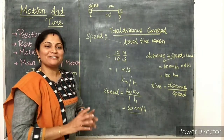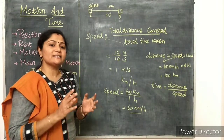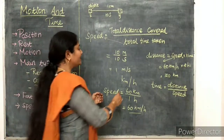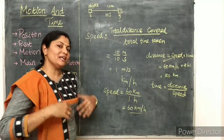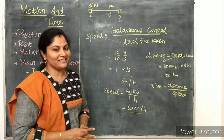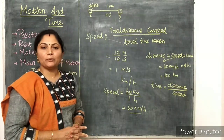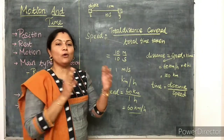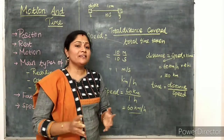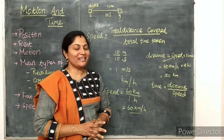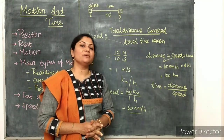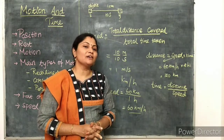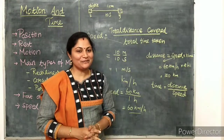That is all about the concept of speed. Remember, the SI unit is meter per second, and the convenient unit is kilometer per hour when traveling long distances. In the next video, we will discuss uniform and non-uniform motion with the graphical method. If you like this video, subscribe to our channel and share with your friends. Thank you, students.